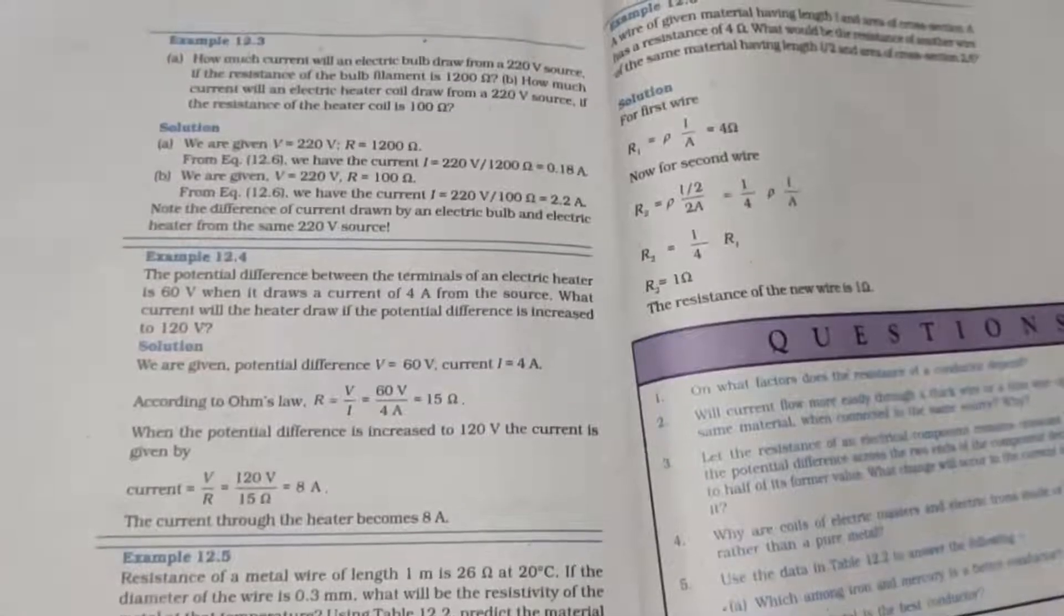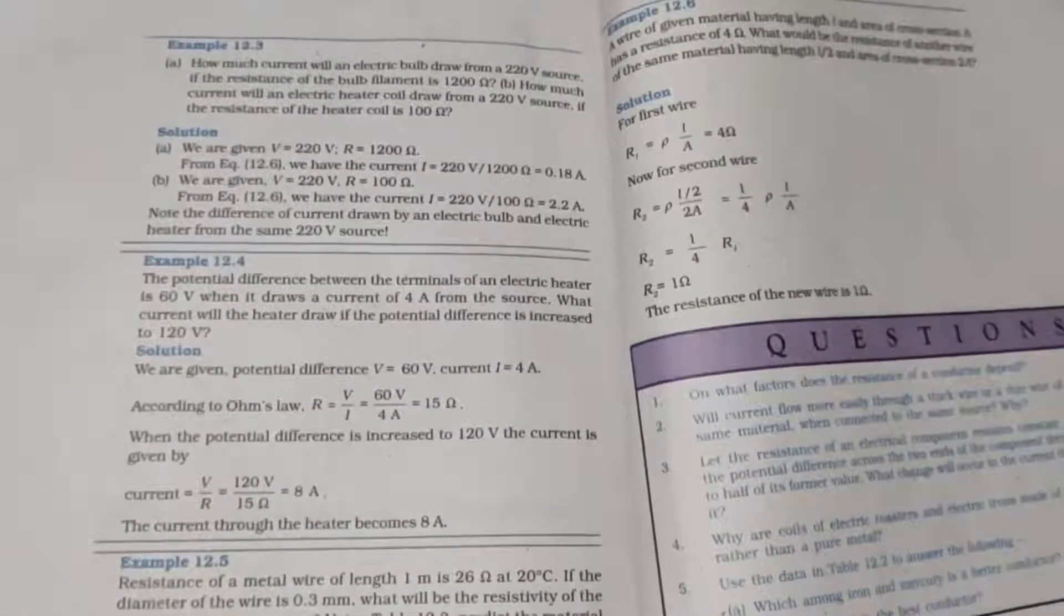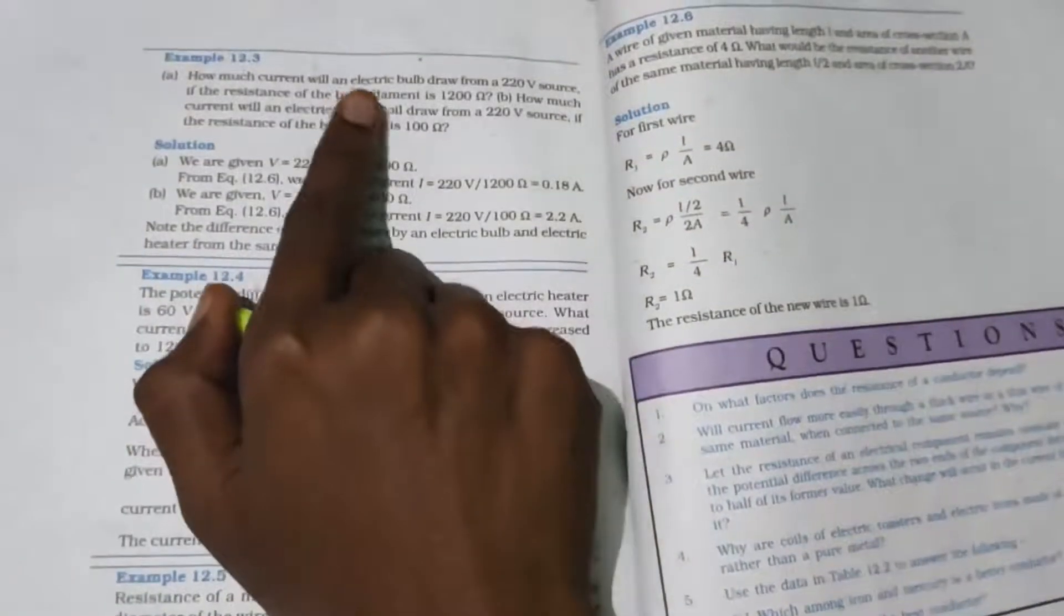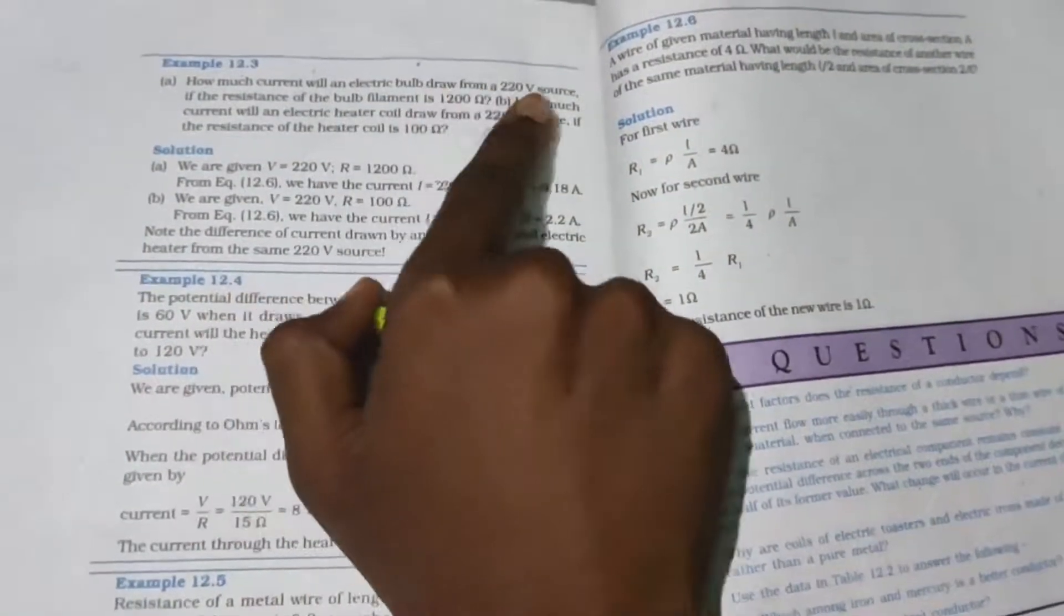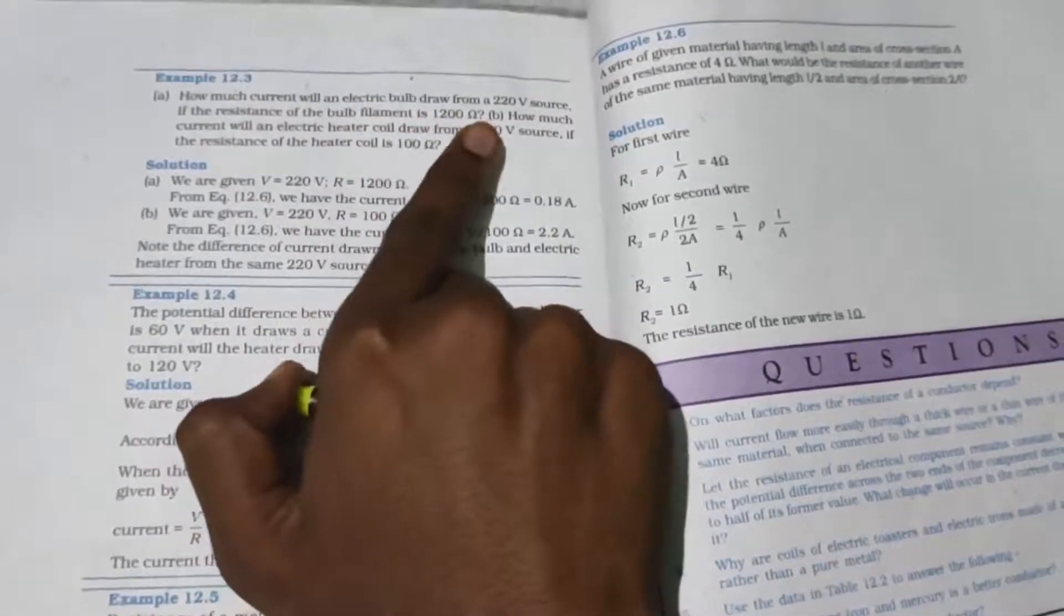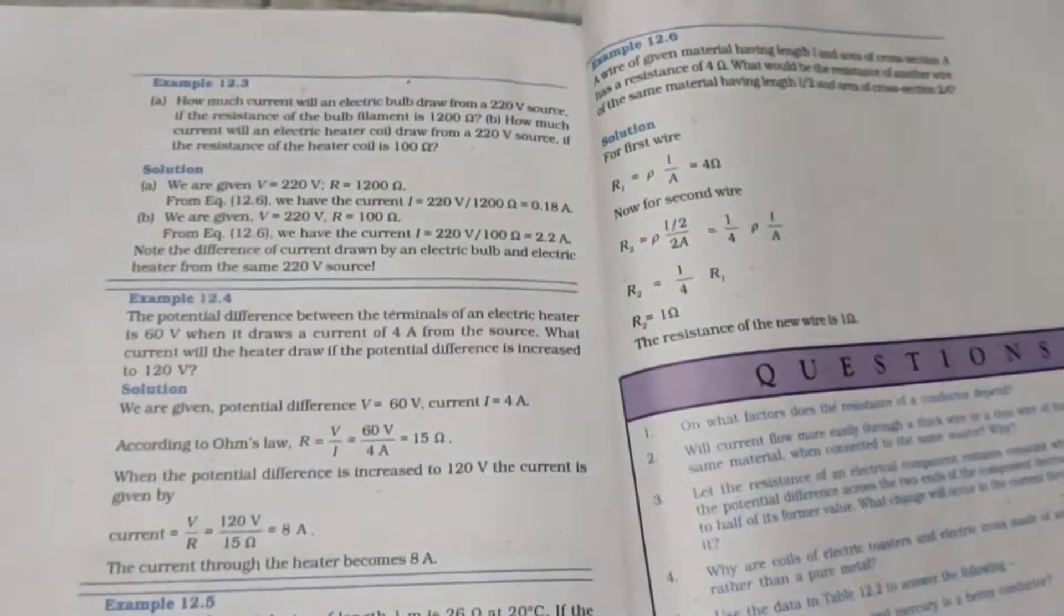Hello kids, welcome to Swift2. Now we are going to discuss Example 12.3. It's a very simple problem we can just get through. How much current will an electric bulb draw from a 220V source if the resistance of the bulb filament is 1200 ohms?